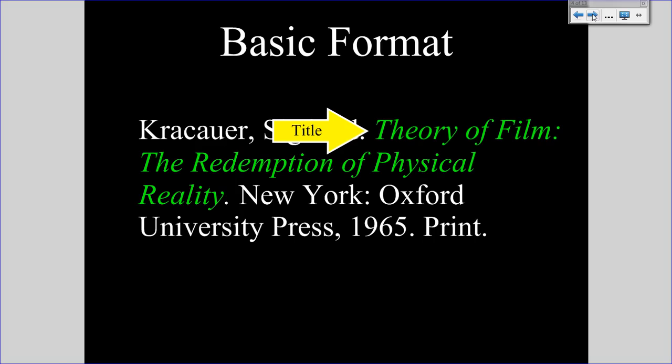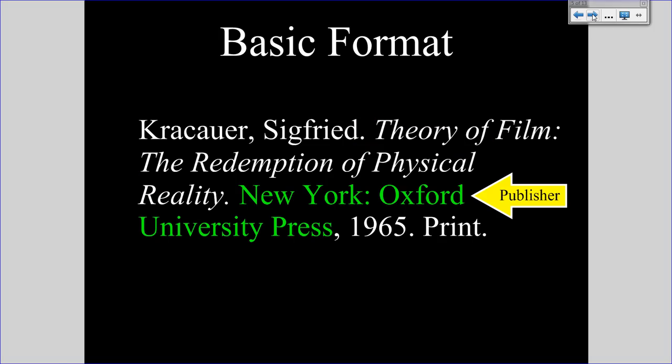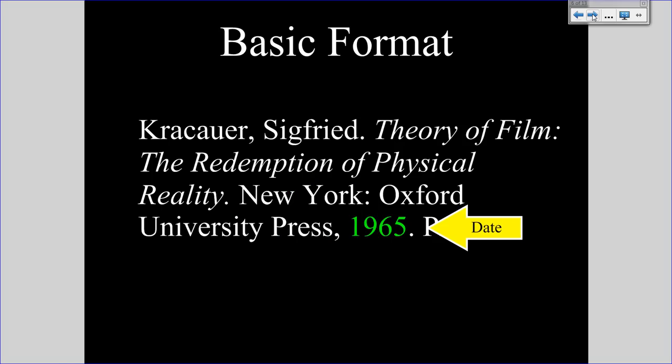Following the author comes the title, and notice in MLA that the entire title is italicized. Following the title comes the place of publication and the publisher. Notice that the place of publication comes first, followed by the publisher. Next, you'll see the date of publication. In the case of a single author print book, the year of publication is sufficient. Finally, the medium of publication — in this case, print.